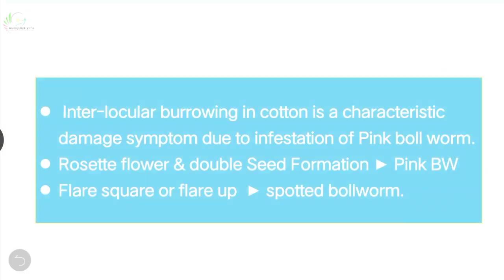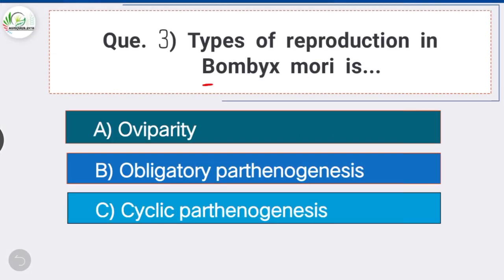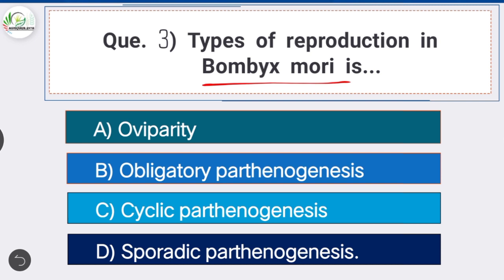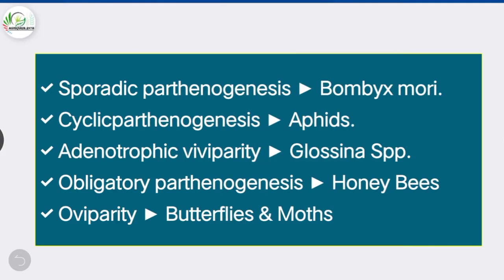Question 3: Type of reproduction in Bombyx mori is Option D, the correct answer: sporadic parthenogenesis. Sporadic parthenogenesis occurs in Bombyx mori; cyclic parthenogenesis occurs in aphids; adenotrophic viviparity occurs in Glossina species; obligatory parthenogenesis occurs in honeybees; and oviparity occurs in butterflies and moths.